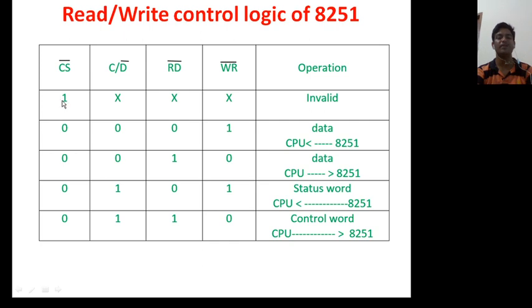If its value is one, means your 8251 is not selected. This is invalid operation. When its value is zero, then you are performing something. When its value is zero, now zero means data is selected because it is active low signal.